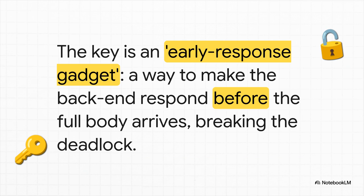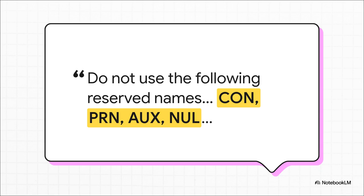The key to shattering this deadlock is beautiful in its simplicity. You need to find what's called an early response gadget — basically any feature or bug that forces the back-end server to send a response before it gets the full request body. If you can trigger one of those, the deadlock is broken. Here's a brilliant, almost hilarious example: those reserved file names in Windows. If you request a path like /con from an IIS server, Windows itself throws a fit, forcing IIS to send back an error response immediately without waiting for the body. It's the perfect deadlock breaker, and it's been hiding in plain sight in old documentation for decades.